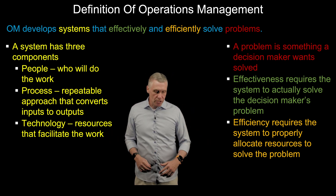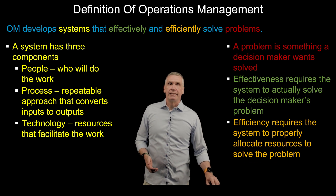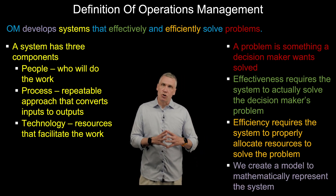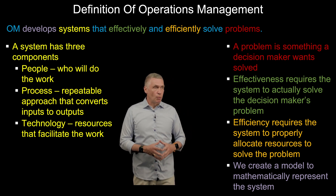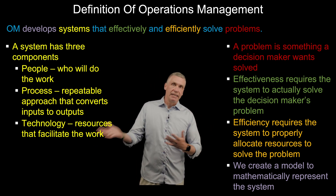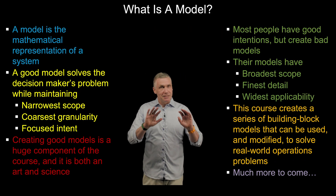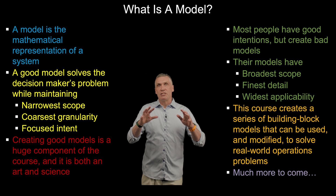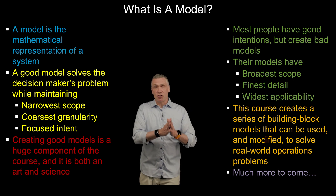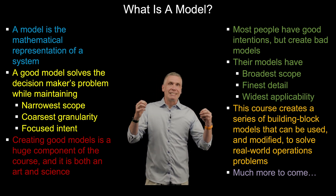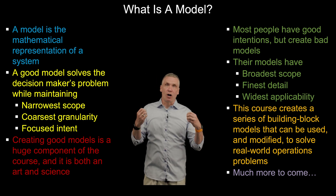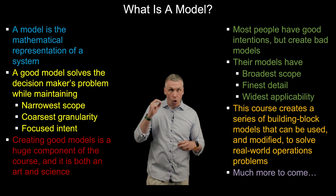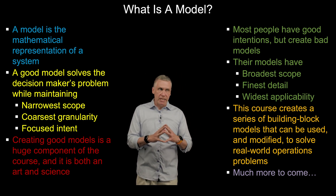We need both effectiveness and efficiency. The first ingredient in our journey to develop these systems is often to build a model — that's our first step. A model is a mathematical representation of the system, of the people, process, and technology.